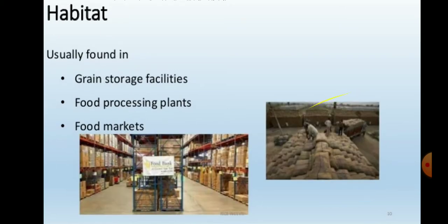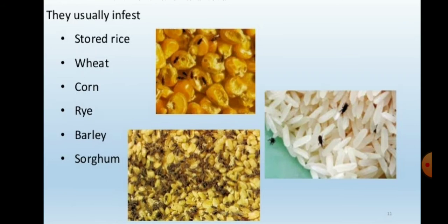The habitat of the rice weevil includes grain storage facilities, food processing plants, and food markets. Stored commodities include rice, wheat, and corn as host plants.